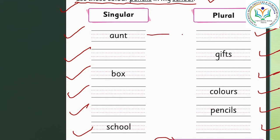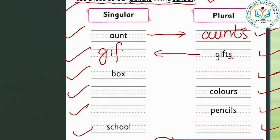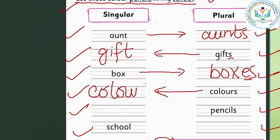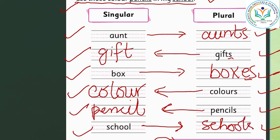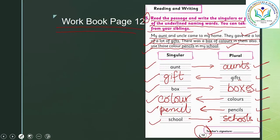Ant — one ant; more: ants. Gifts — gift. Box — boxes. For the word box, we are going to add 'es.' Colours — colour. Pencils — pencil. School — schools. So the answers are: ants, gift, boxes, colour, pencils, school. Once you are done with page number 12, move on to the homework.